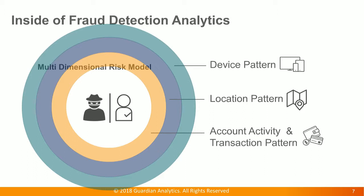You may be most interested in knowing what's inside of fraud detection analytics and what kind of data are made available for it. Guardian Analytics uses a multi-dimensional risk model for detection. The algorithm learns about users' device pattern, location pattern, account activity pattern, and many more. These behavioral dimensions are used to build a complete profile of the user. Within each of these dimensions, there are hundreds of data attributes collected for fraud evaluation, and all these behavioral data are made available for fraud detection analytics.